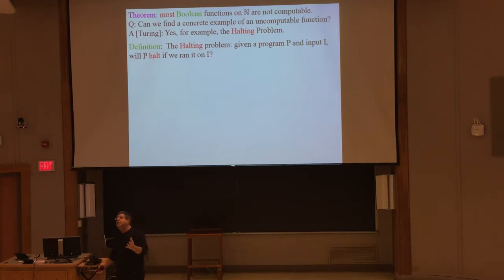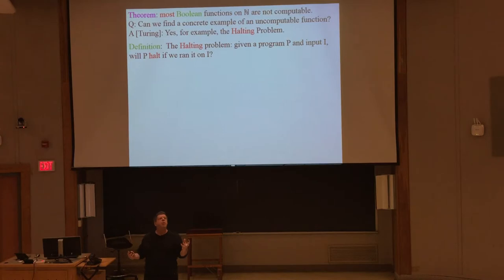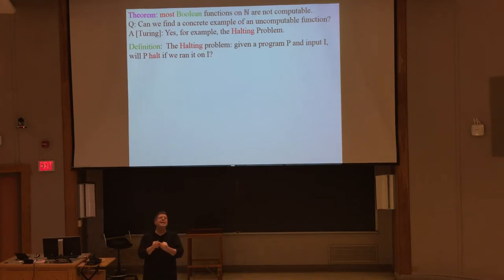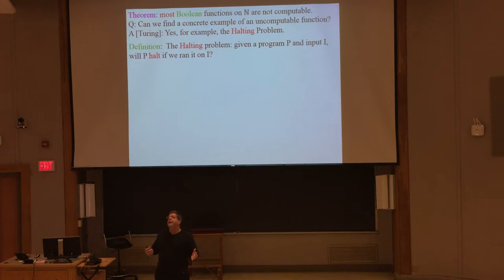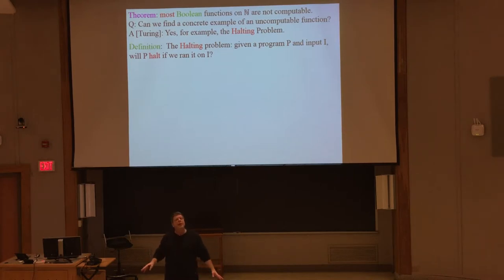It turns out that's undecidable — there's no algorithm in the universe to compute that — and we're about to prove it. Now that's a very simple question and it's completely well-defined. Whether a program halts or doesn't halt is not a deep, mysterious question. The answer is either yes or no — one of those two. It's the law of excluded middle: a piece of code either halts or it doesn't halt. It can't do both and it can't do neither. So it's a boolean function.